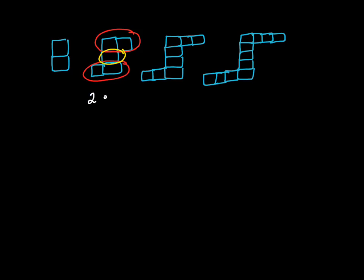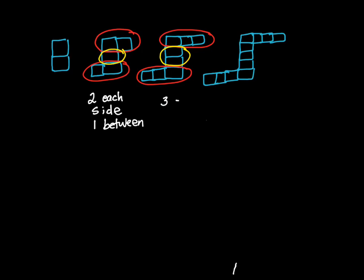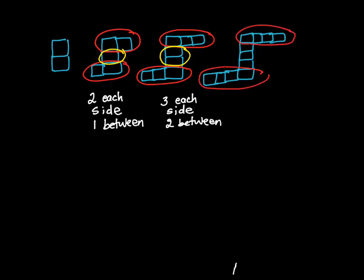This is the pattern that we have. As you can see, in the second term there are two tiles on each side and there's one tile in the middle. In the next one, there are three tiles on each side and there are two in the middle. In the fourth term, there are four tiles on each side and three tiles in the middle.